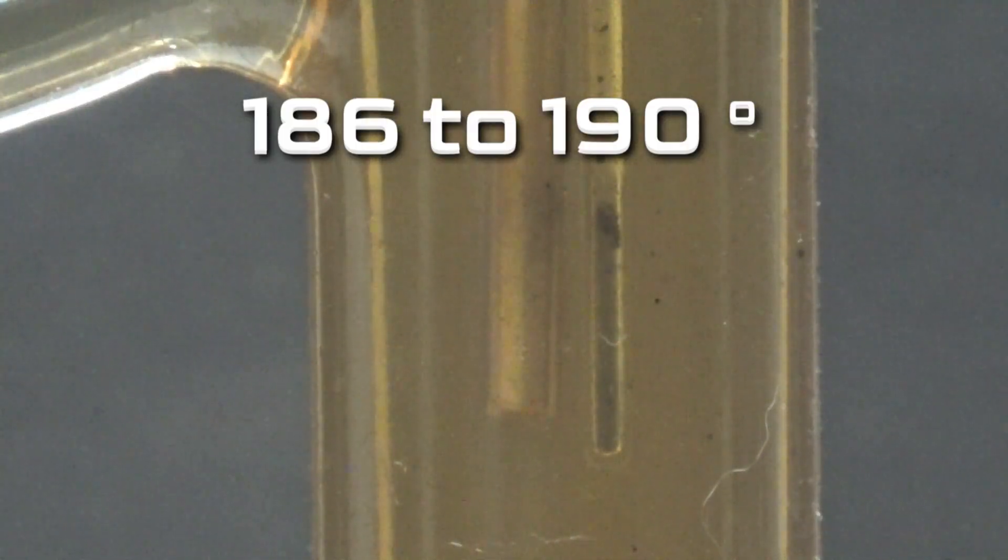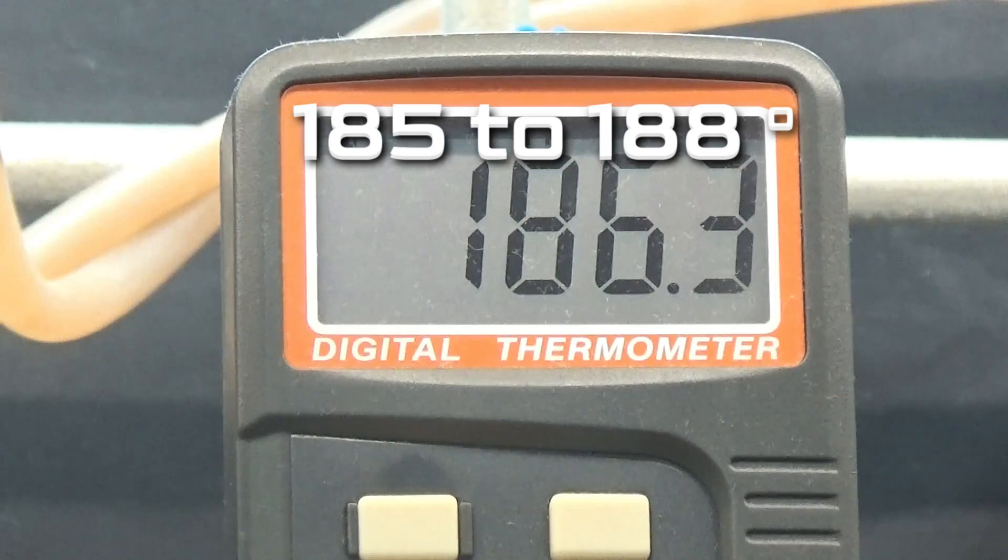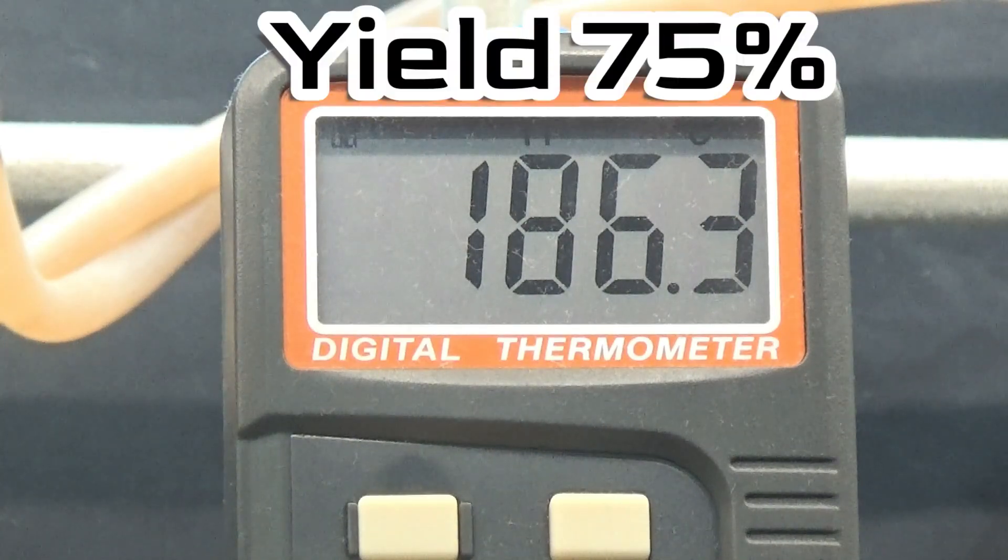The melting point of the acid has been determined with a result of 186 to 190 degrees. The melting point according to literature is 185 to 188 degrees, a good result in the purity of the acid obtained. The yield of this operation was 75%.